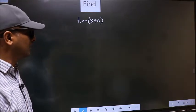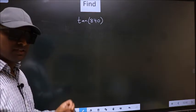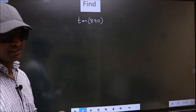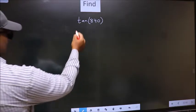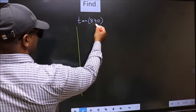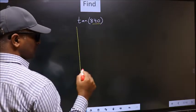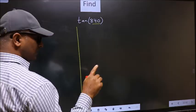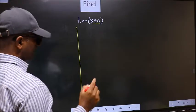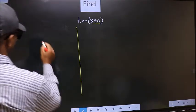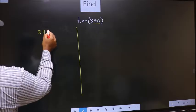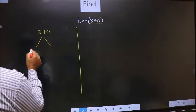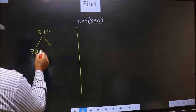Find tan 840. To find this, we should follow this method. See, here we have 840. Now we should check: 840 lies between which two multiples of 180? What I mean is, 840 lies between 720 and 900.